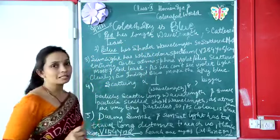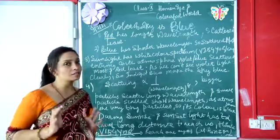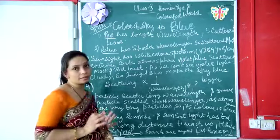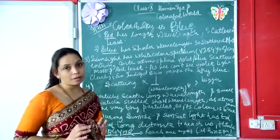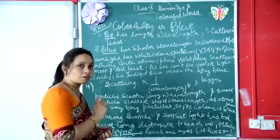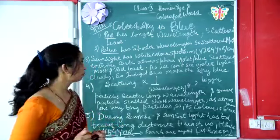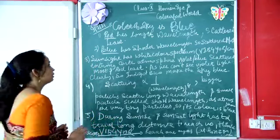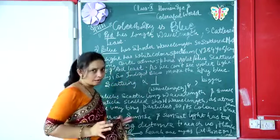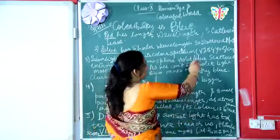As we know, red color has the longest wavelength, so that's why it is scattered least. And blue color has a shorter wavelength, so that's why it is scattered most. Sunlight has a white color spectrum — it contains all seven colors: violet, indigo, blue, green, yellow, orange, red.